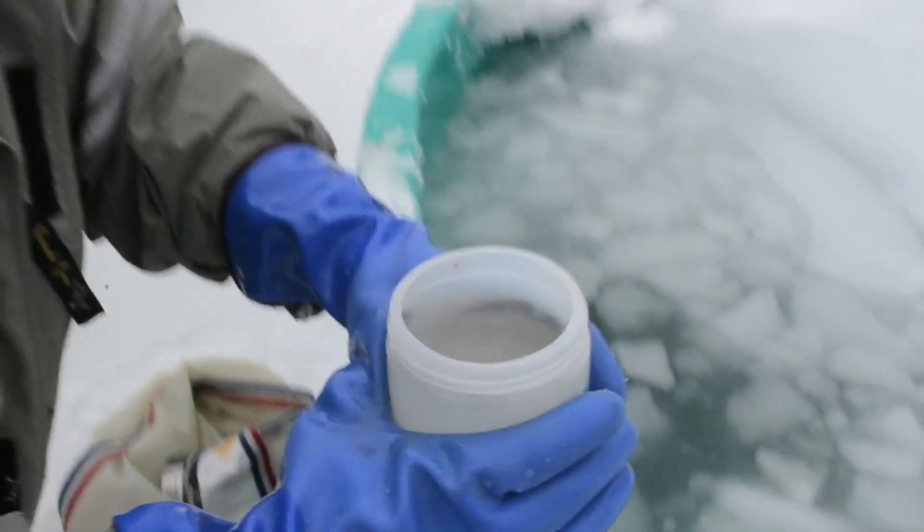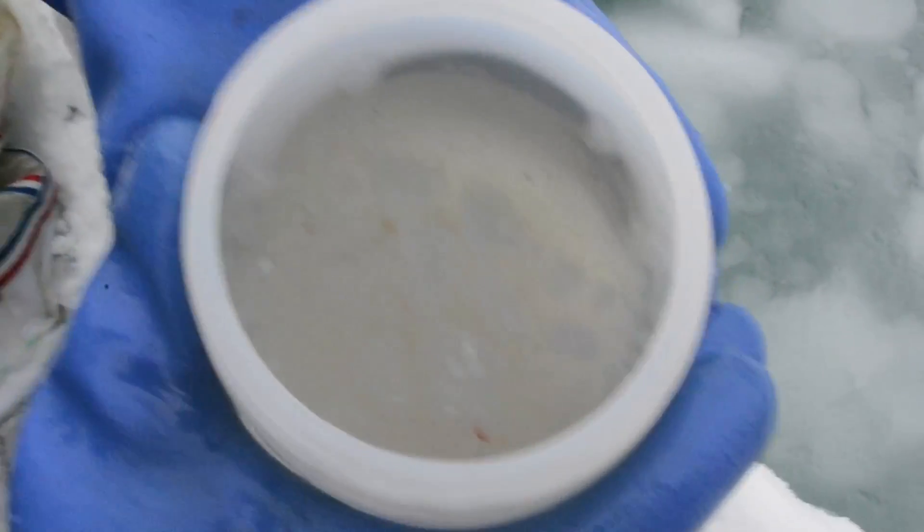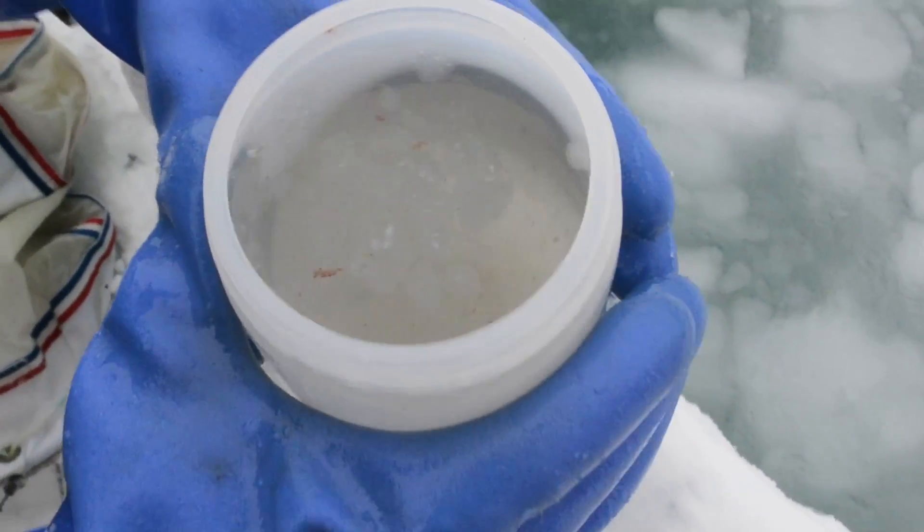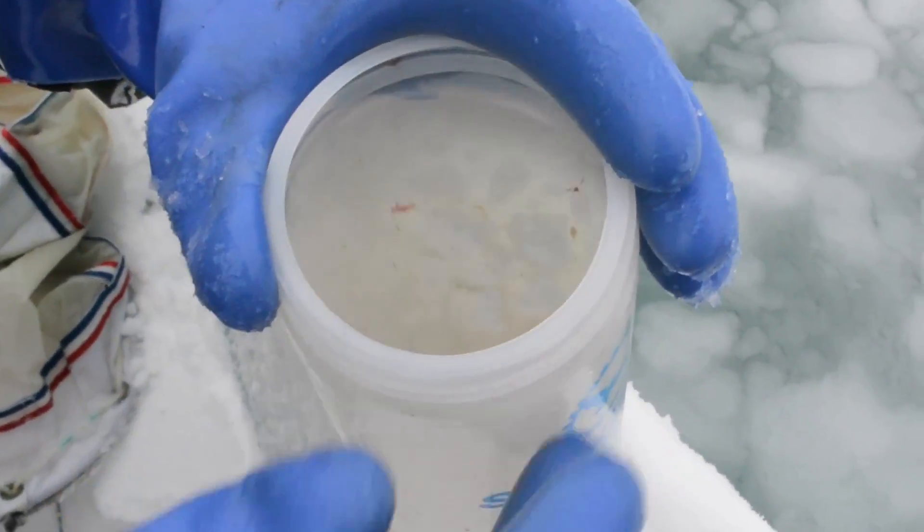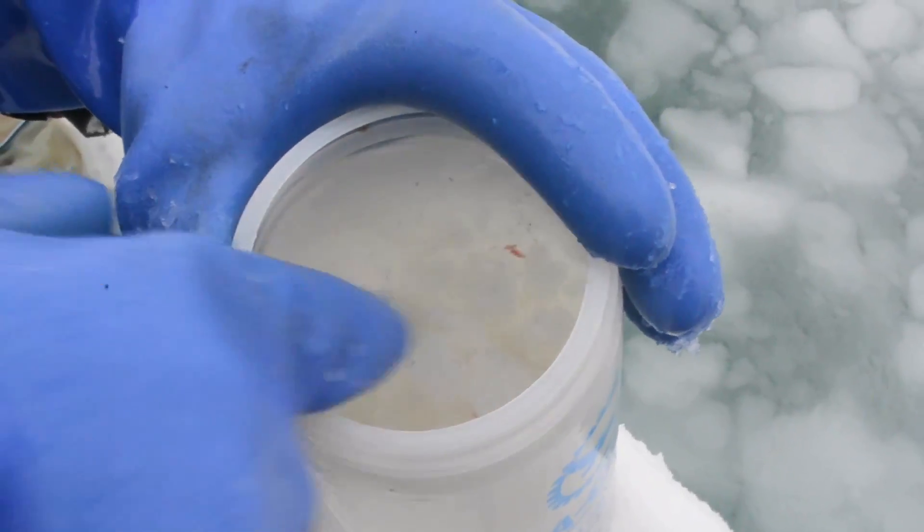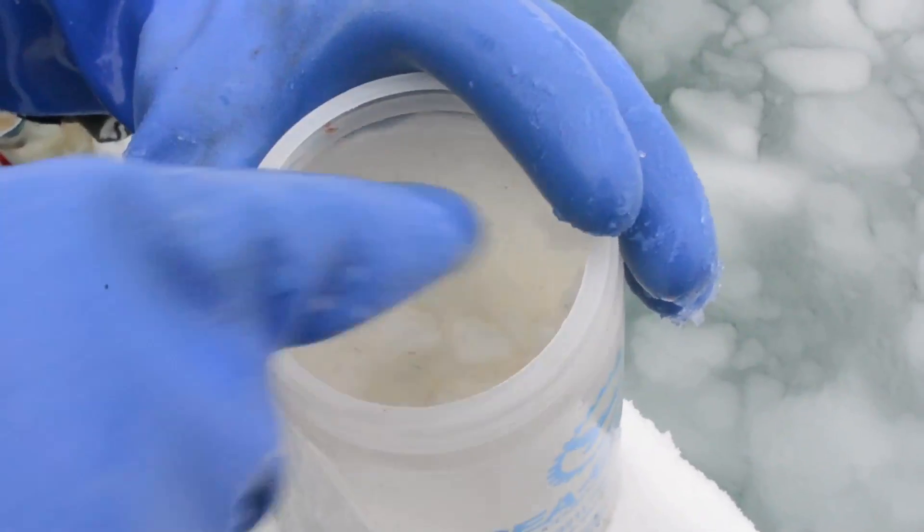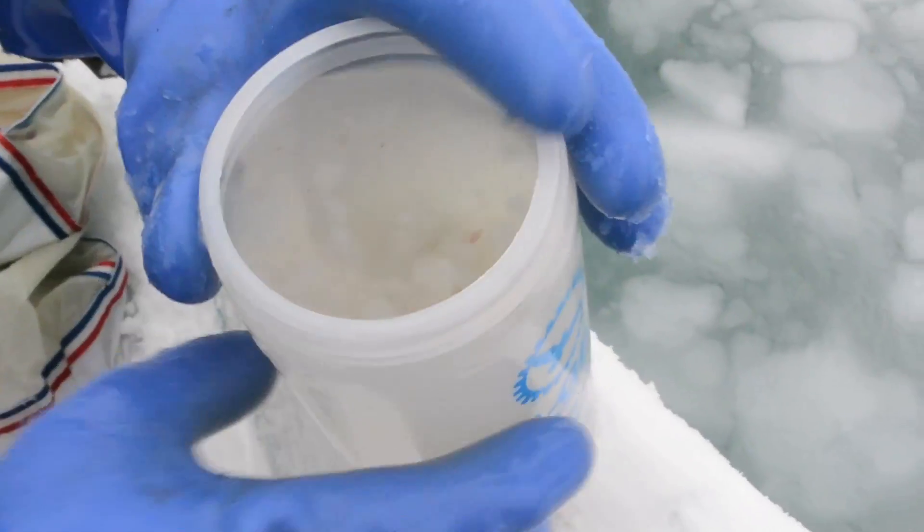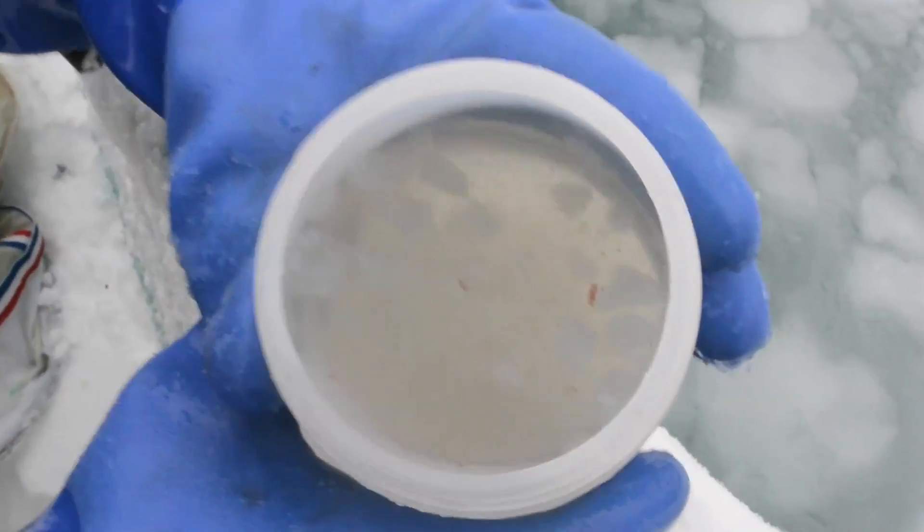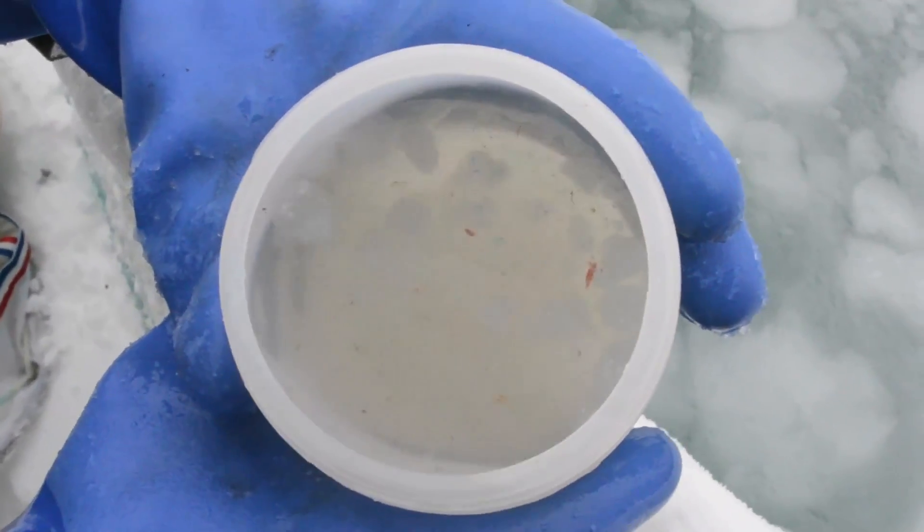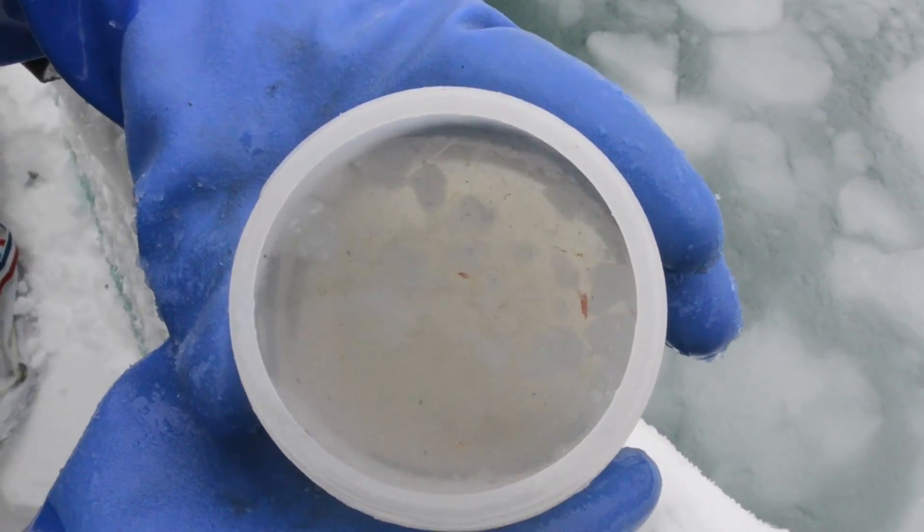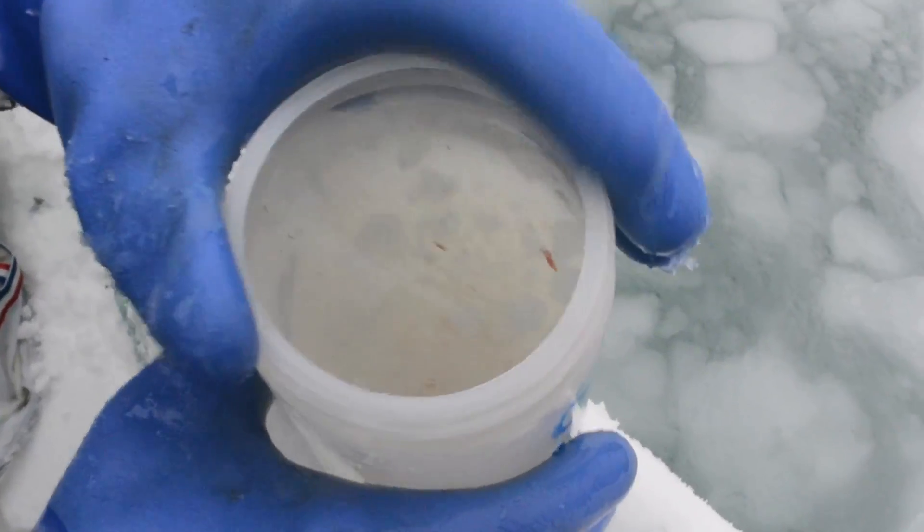You can actually see some things in here along with the ice. We usually catch some of these little animals. There's a lot of particles in there. Some of those are phytoplankton, some of them are little animals that are swimming around.